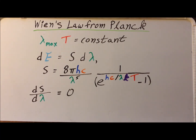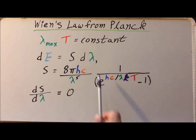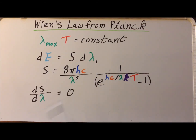To solve for lambda max in the Wien displacement law, we are going to take the derivative of S with respect to lambda and set it equal to zero, which is our condition for a maximum or minimum.